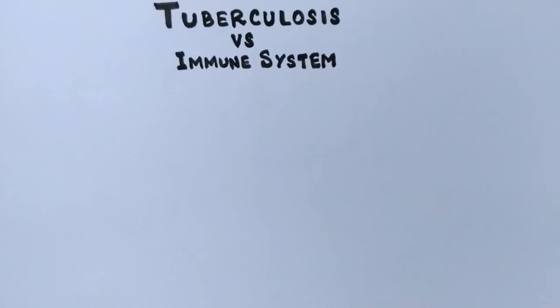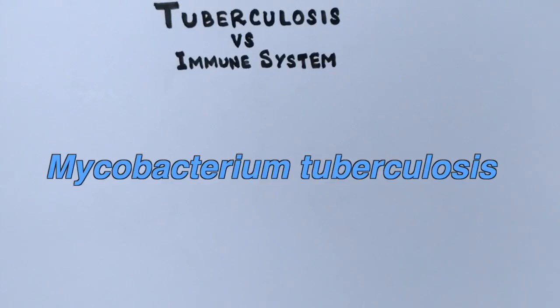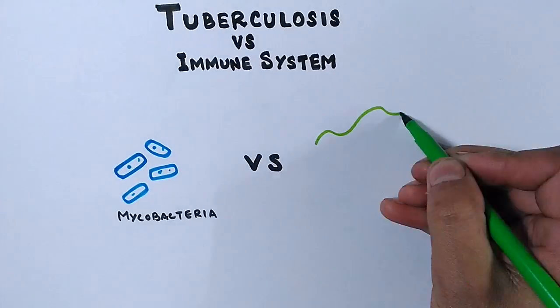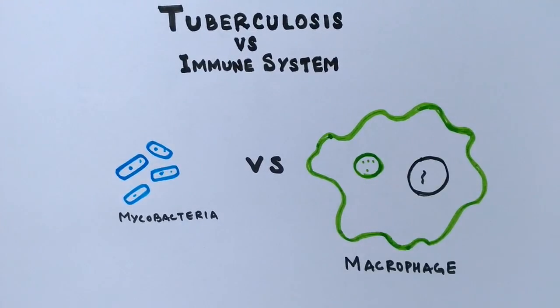We know that the tuberculosis disease is caused by a bacterium known as mycobacterium tuberculosis. So to be more precise it is the mycobacteria versus the macrophage of our immune system, the alveolar macrophage.